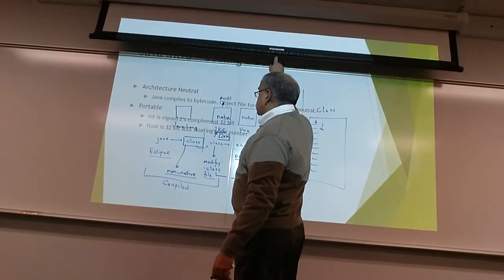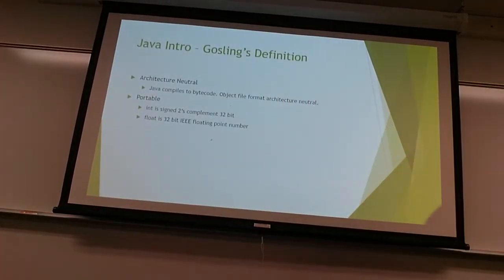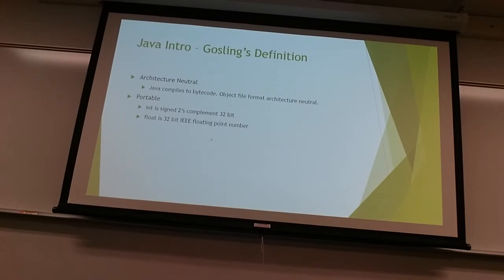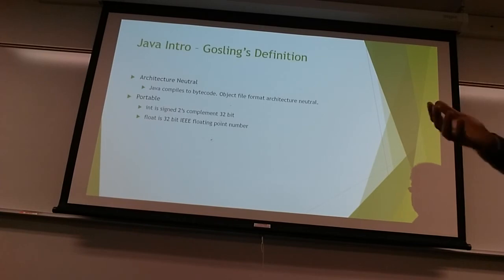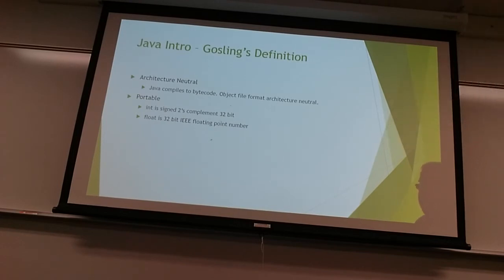Java is also portable. In C++ or C, older versions had an integer that would be either 2 bytes or 4 bytes depending on the hardware architecture. In Java it's always 4 bytes. There is a character data type that supports all natural languages — so Java can understand Hindi, German, Mandarin — it understands all character sets. The same Java program can run on Windows, Unix, and all different operating systems and underlying hardware architectures.